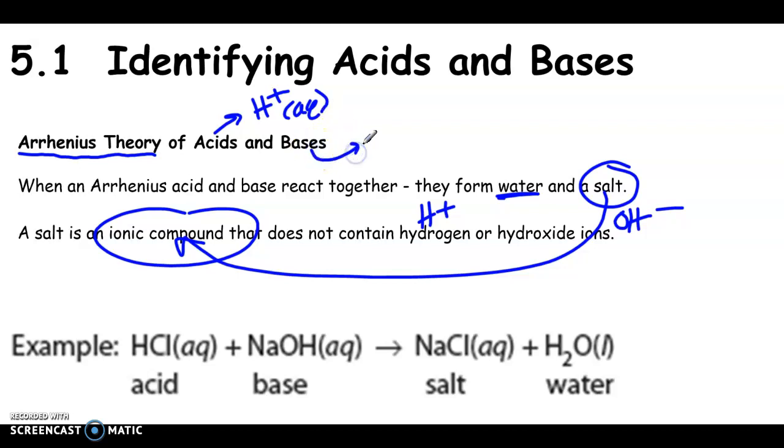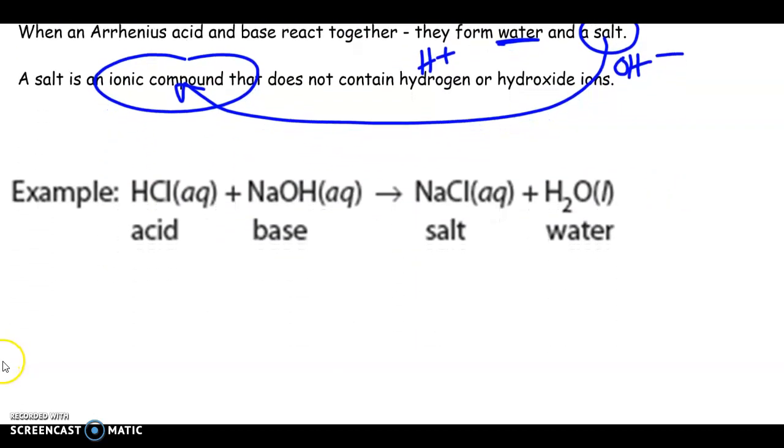A base is any compound that when it breaks down in water or dissociates, it creates a hydroxide ion. Okay, so acids have hydrogen ions, bases have hydroxides. So technically, a salt is any ionic compound that does not contain hydrogen or hydroxide.